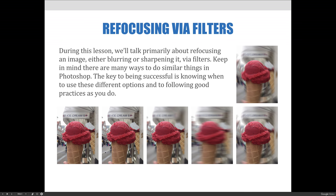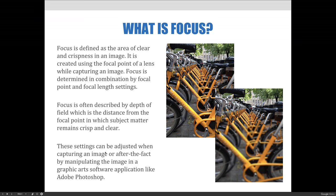Before we get started, it is important to point out that there are many ways to do similar things in Photoshop. During this lesson, we will talk primarily about refocusing an image, either blurring or sharpening it via filters. Since there are so many different ways to do similar things in Photoshop, the key to being successful is knowing when to use these different options and to follow good practices as you do. So, let's get started.